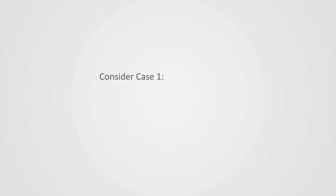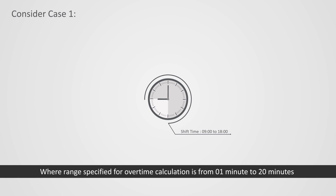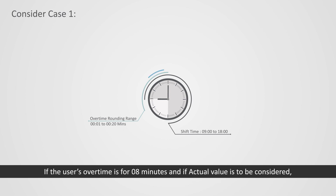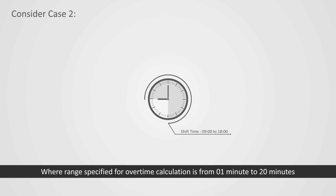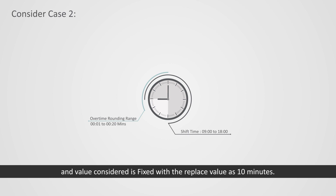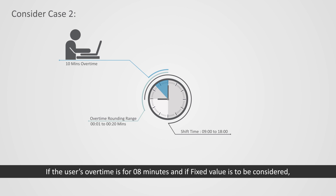Consider Case 1: where the range specified for overtime calculation is from 1 minute to 20 minutes and the value considered is actual. If the user's overtime is 8 minutes and actual value is to be considered, then 8 minutes will be considered in overtime calculation. Consider Case 2: where the range is from 1 minute to 20 minutes and the value is fixed with a replace value of 10 minutes. If the user's overtime is 8 minutes and a fixed value is to be considered, then 10 minutes will be considered in overtime calculation.